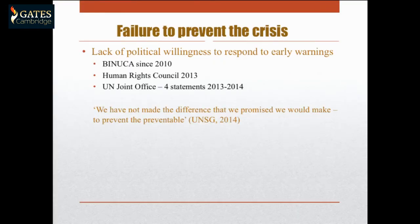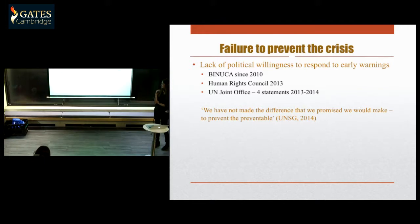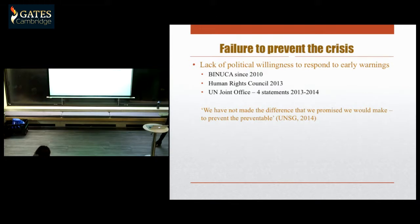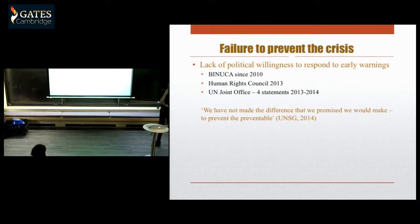The answer comes in three layers. First, the response was not proportional, because the international society failed to prevent the crisis. This was simply a matter of lack of political willingness to respond to early warnings. It was not that they didn't know what was happening — the UN Peacebuilding Office had been on the ground since 2010, because violence predated 2013. It was only in 2013 that it developed along ethnic lines.